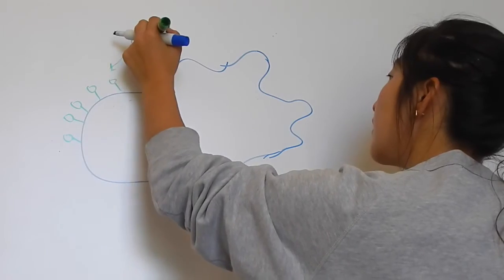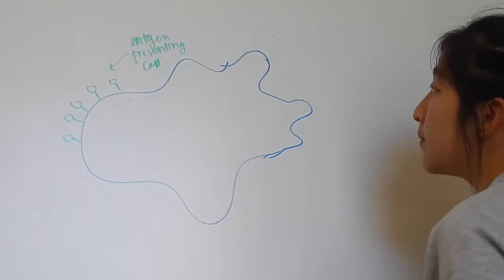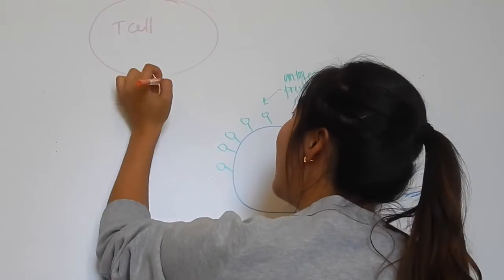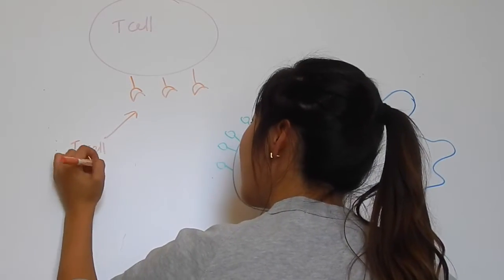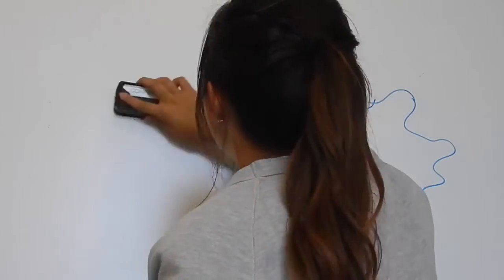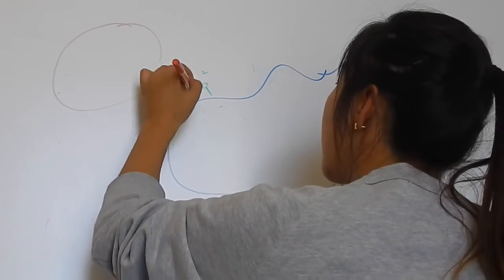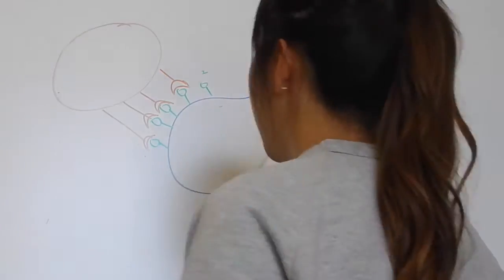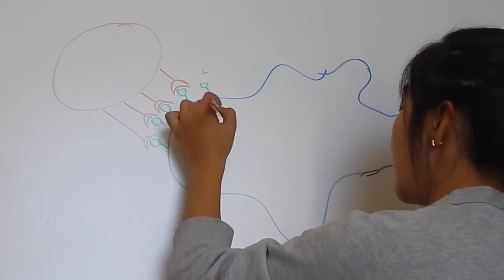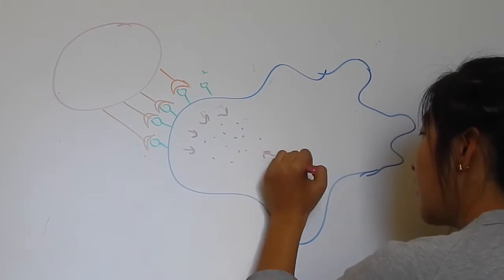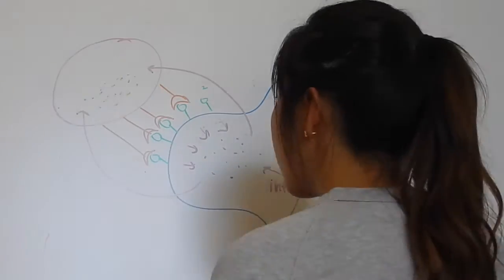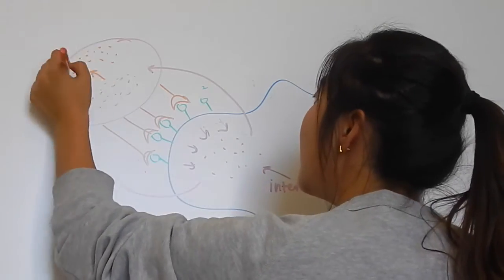The cell then displays the antigen fragments on the surface and is now called an antigen-presenting cell. The corresponding T cell binds to the antigen fragments on the surface of the presenting cell. The macrophage releases interleukin-1 to stimulate the T cell, which then releases interleukin-2.